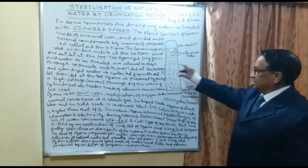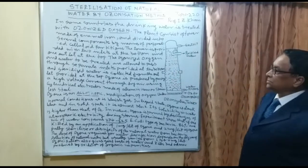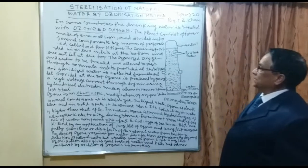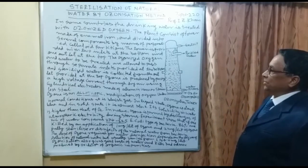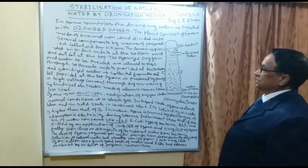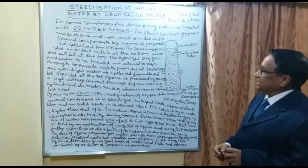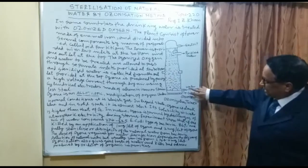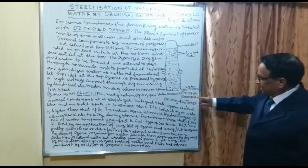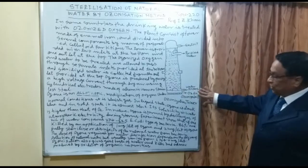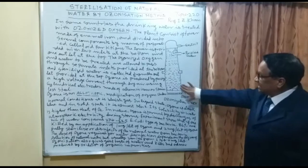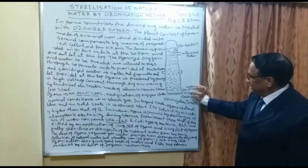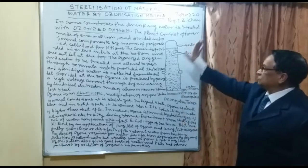The tower is divided into vertical and horizontal columns in several components by means of perforated celluloid partitions. The tower is provided with two inlets from where the water and ozone enter, and then it is pumped inside the tower.